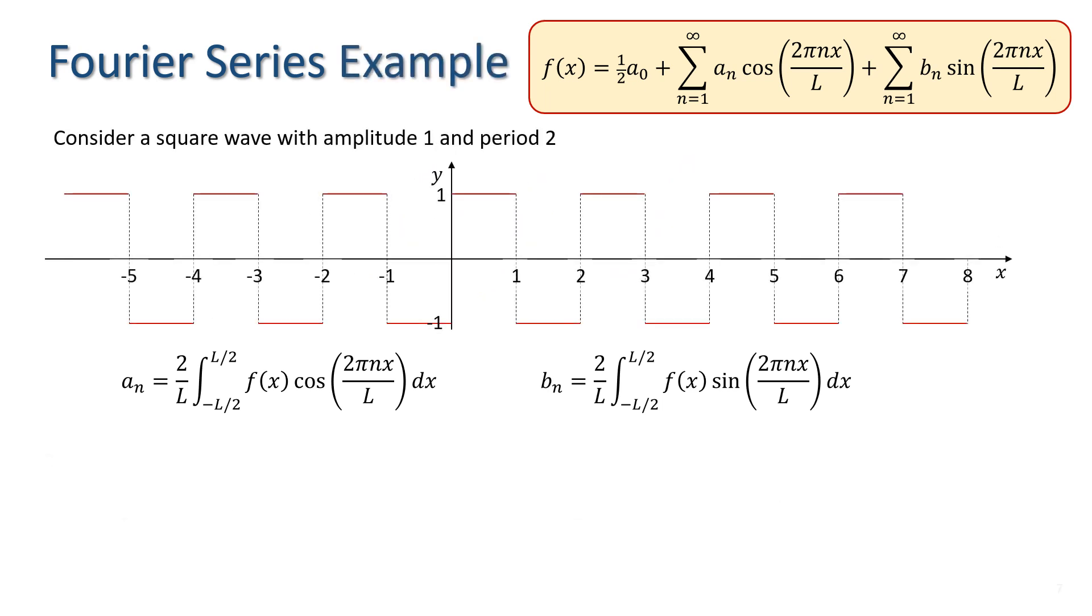Consider a square wave with amplitude 1 and period 2 as shown here. In this case, since the period L is 2, we need only consider the interval x between minus 1 and 1.